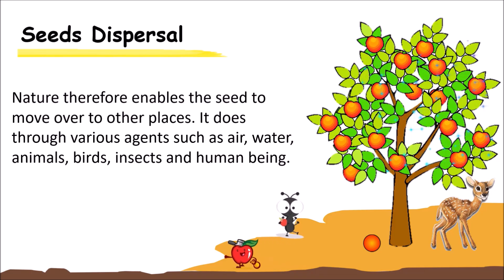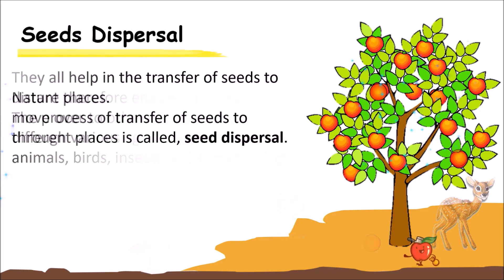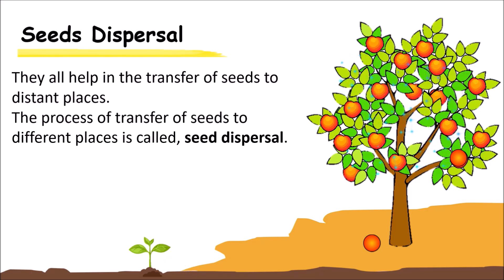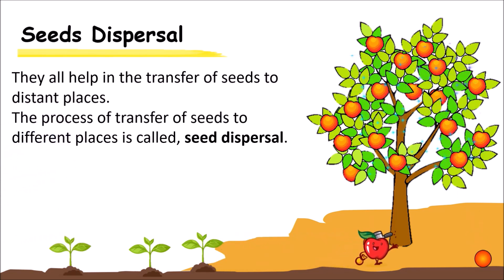It does this through various agents such as air, water, animals, birds, insects and human beings — they all help in the transfer of seeds to different places. The process of transfer of seeds to different places is called seed dispersal.